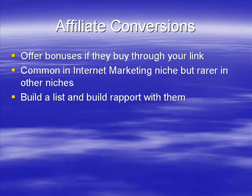Another thing to do is to build a list as an affiliate marketer. Build a list and build rapport with them. If you have rapport with your list, you're going to find it a lot easier to sell affiliate products. When you have a good relationship with the list and you recommend a product, a good percentage of them will buy because they trust you. I've seen people with huge lists and no rapport sell nothing, yet people with small lists and great trust sell massive amounts of product. It's a huge difference.